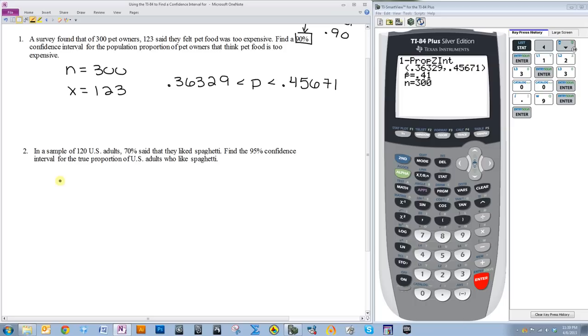So, N is always going to be the easiest thing you find. It is your sample size. So, N in this case is 120.